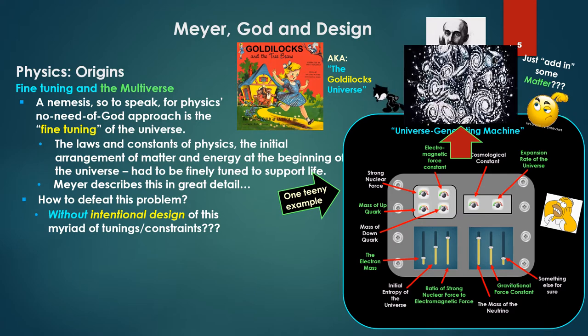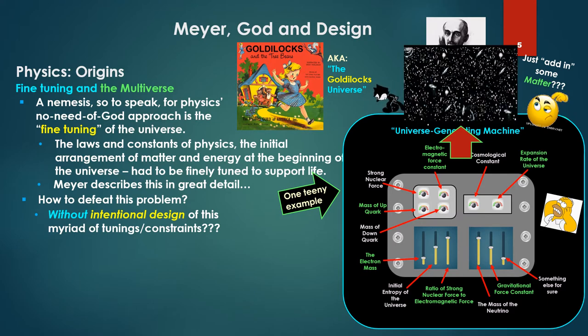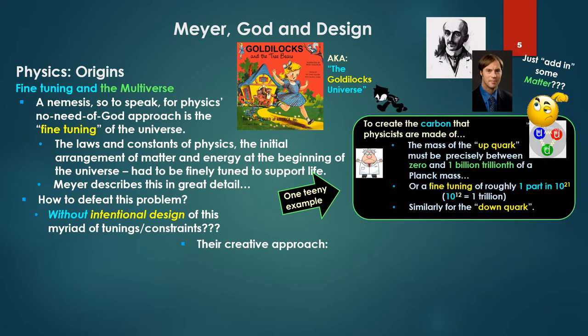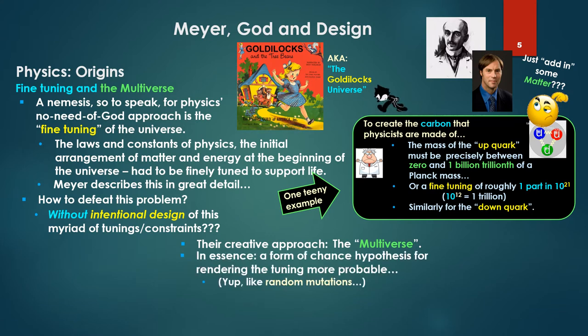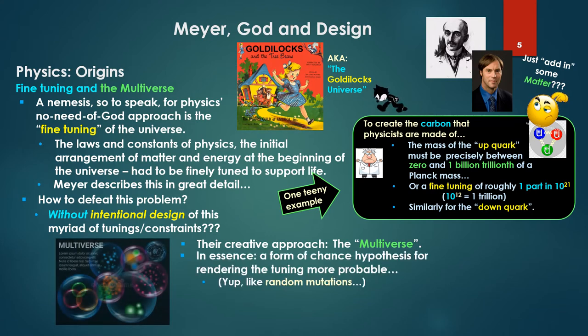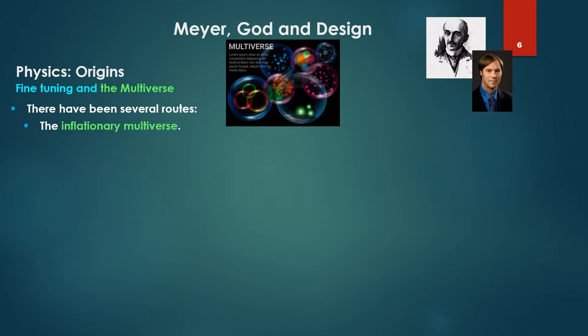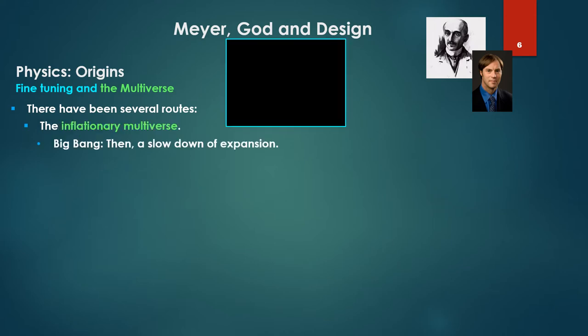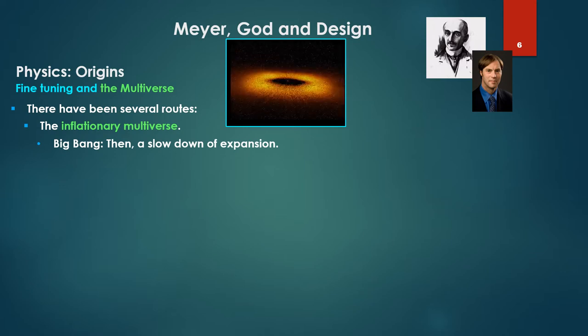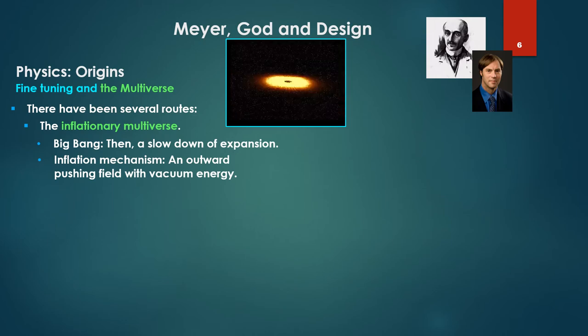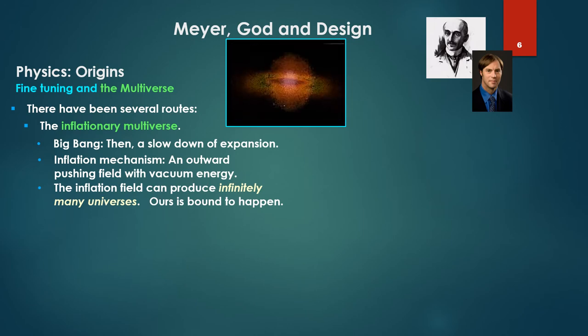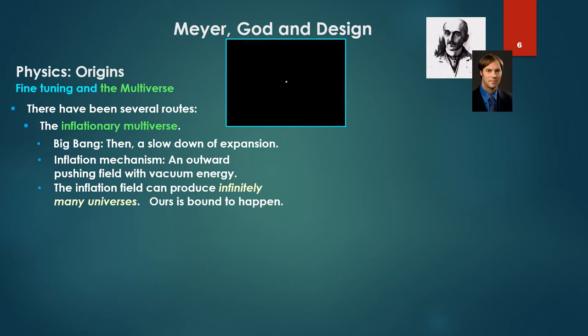The creative approach of the physicist: the multiverse. In essence, a form of chance hypothesis for rendering the tuning more probable—something like random mutations. It posits many other universes and mechanisms for producing these universes. There have been several routes: the inflationary multiverse—a big bang, then a slowdown of expansion. The inflation mechanism is an outward pushing field with vacuum energy. The inflation field can produce infinitely many universes, so ours is bound to happen.